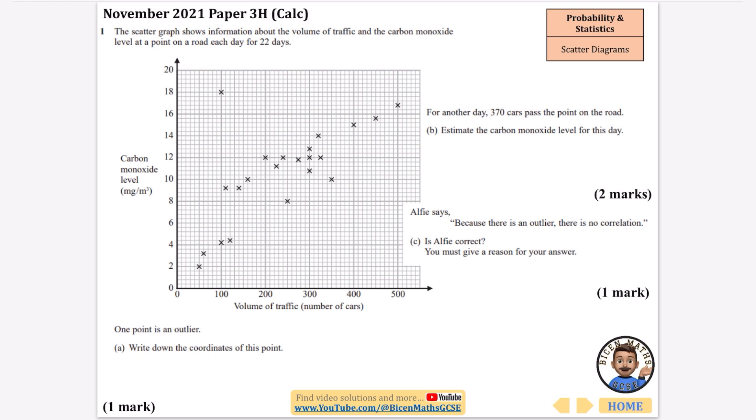Scatter graph shows information about the volume of traffic and the carbon monoxide level at a point on a road each day for 22 days. That means there's 22 dots here. One point is an outlier. Write down the coordinates of this. The x coordinate is 100 and the y coordinate is 18. For another day 370 cars past the point on the road. Estimate the carbon monoxide level for this day. This 370 is going to be here. I'm going to try and draw a line of best fit through as many of these points as possible. I'm going to draw up from 370 to the line just around here and then draw across. It looks like about 13.8.